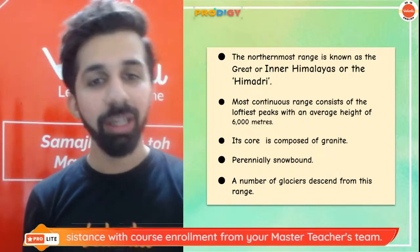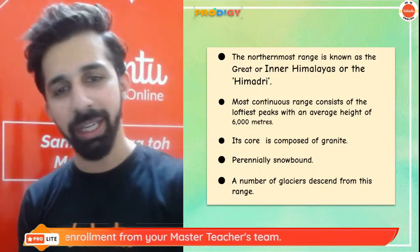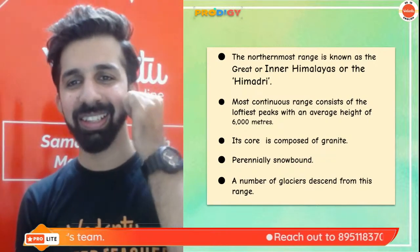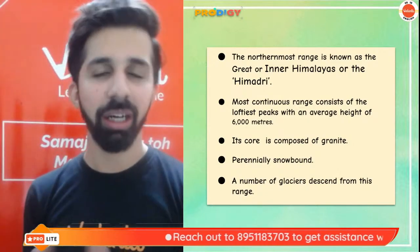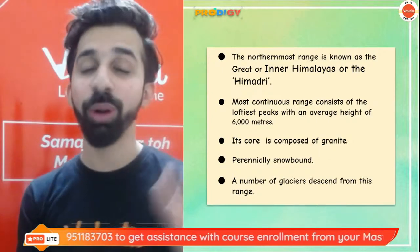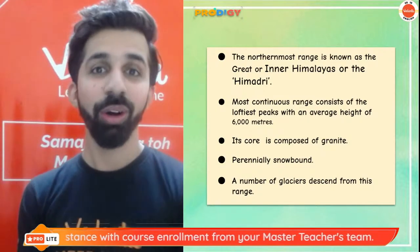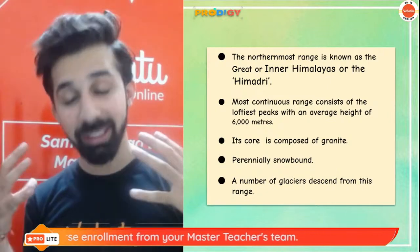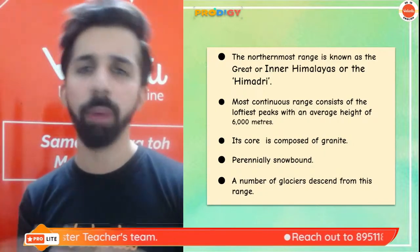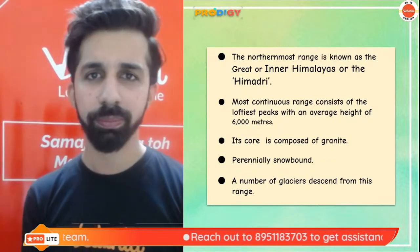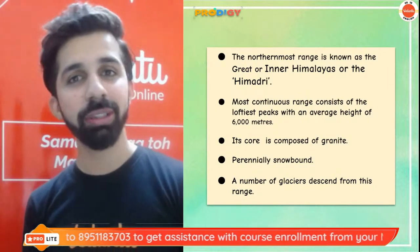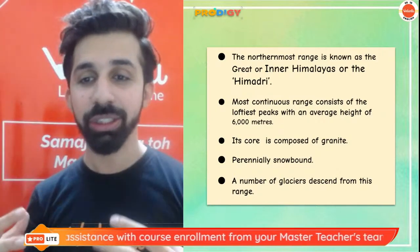Himadri, also known as inner Himalayas or great Himalayas, are the northernmost ranges. On average, the altitude is 6,000 meters. These ranges consist of granite and are mostly snow-bound — meaning covered by snow throughout the year. Because of the snow cover, many glaciers descend from these ranges.